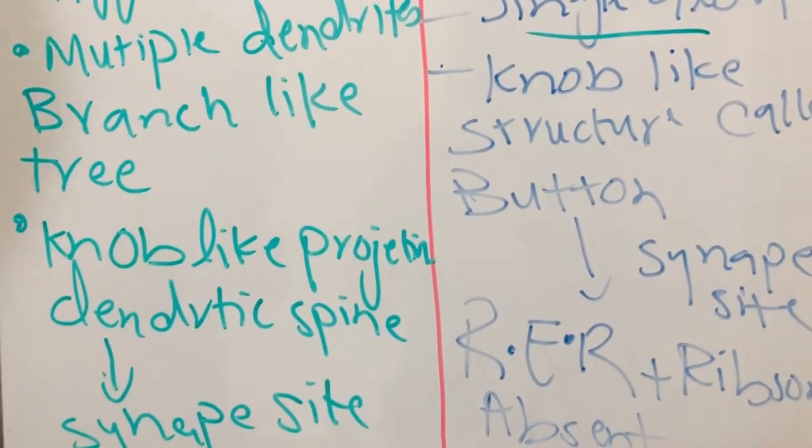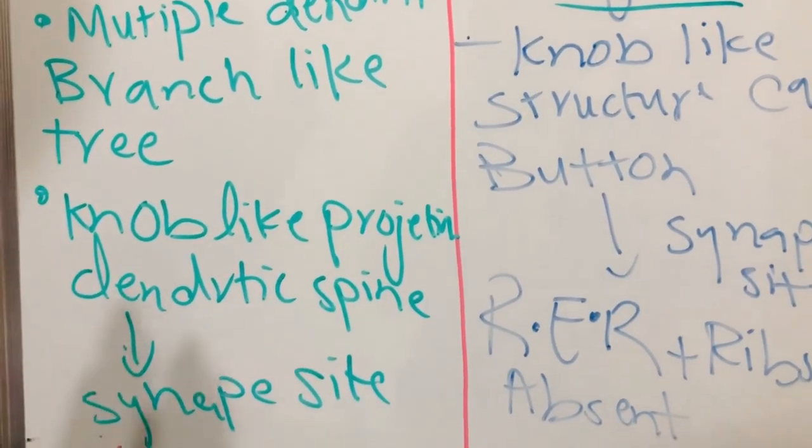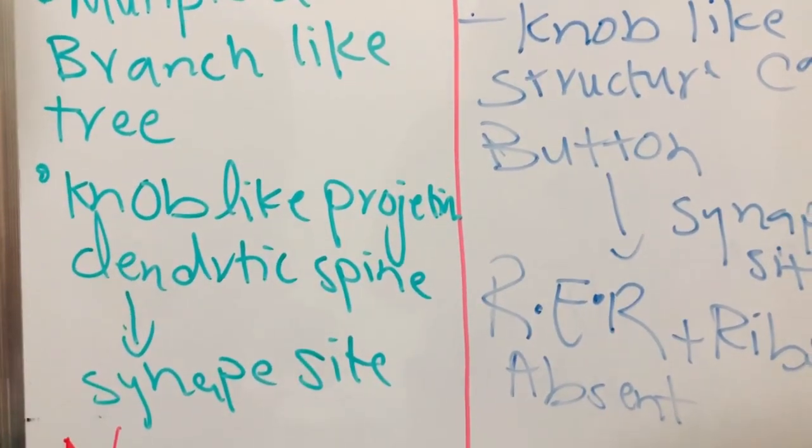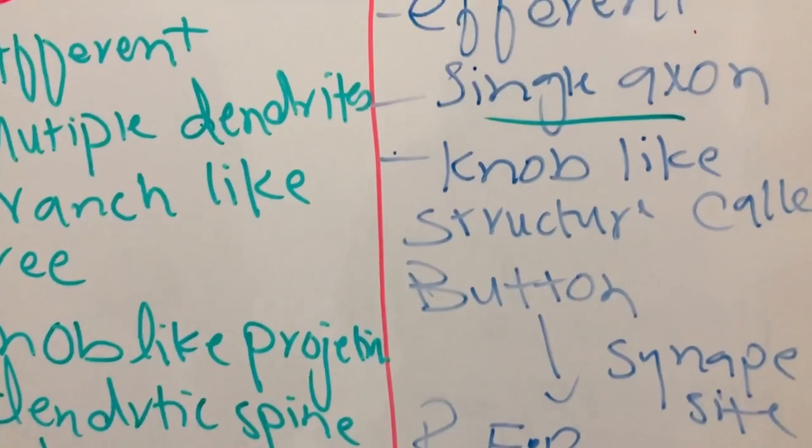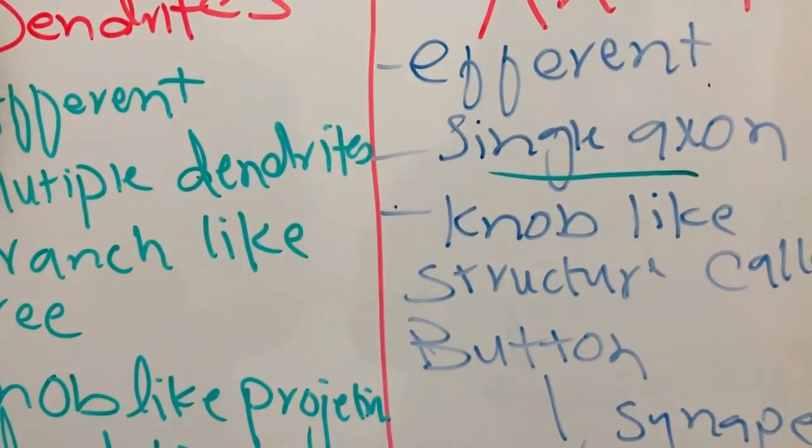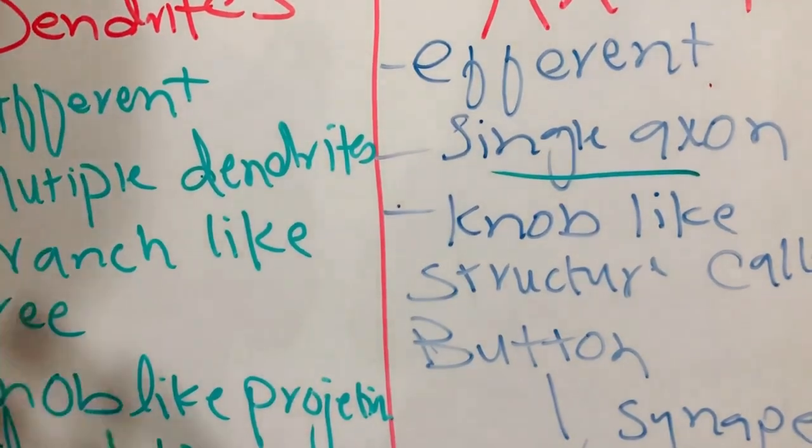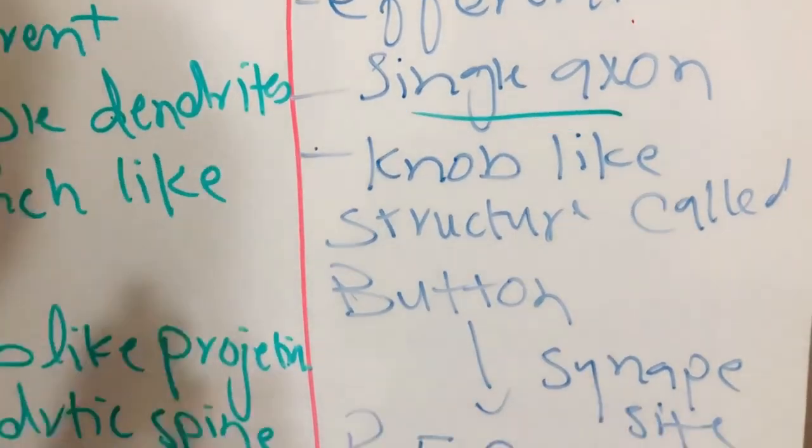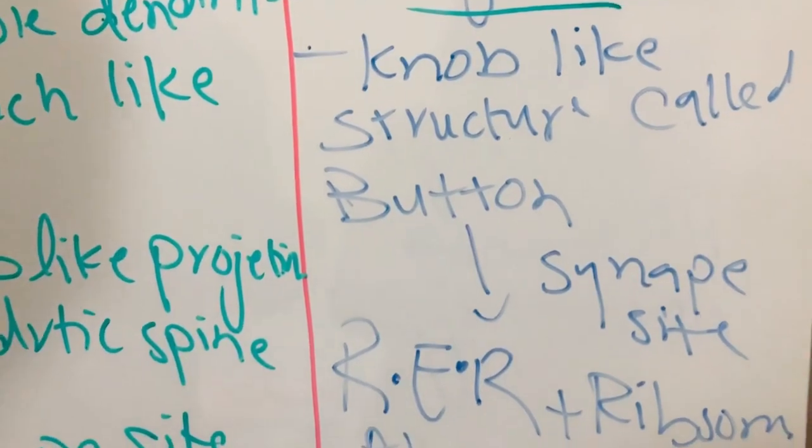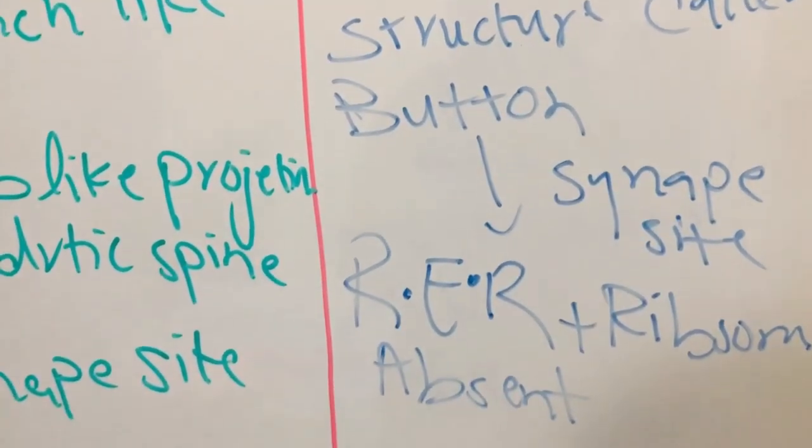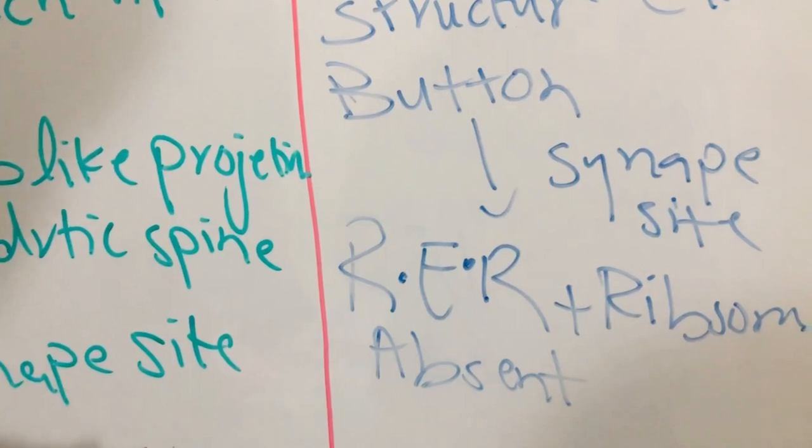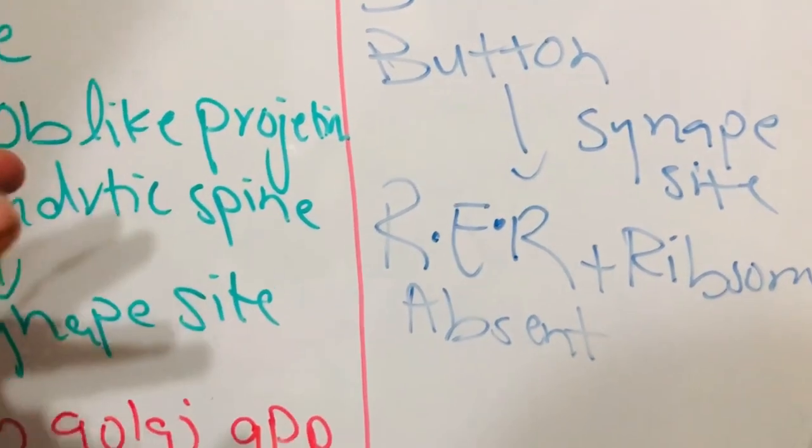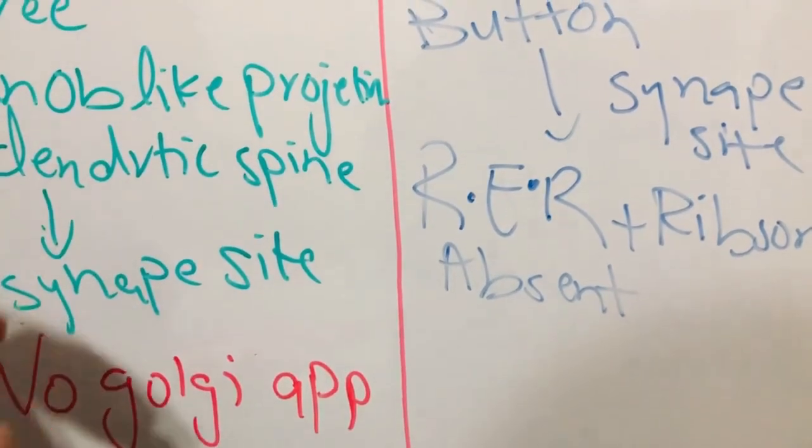In the dendrite spine, which is our site for the synapse, creates our sensory information. The dendrites have no Golgi apparatus. In axons there is a knob-like structure that is the button, that is the synapse site. Also, one important part in the axon is there is no rough endoplasmic reticulum and ribosome, which means there is no synthesis of protein.